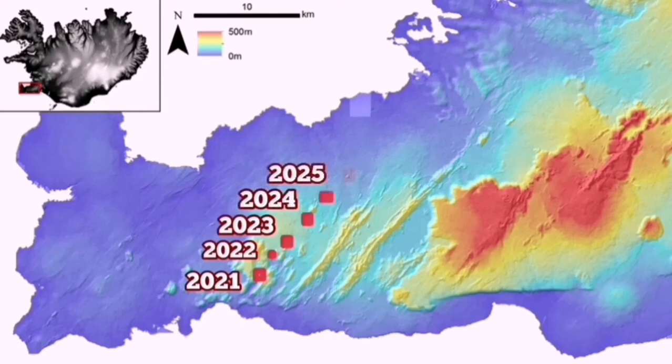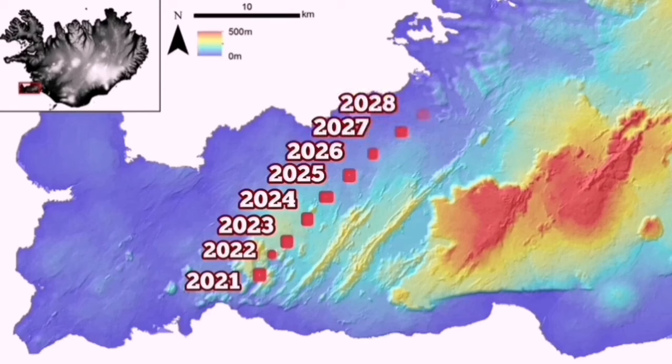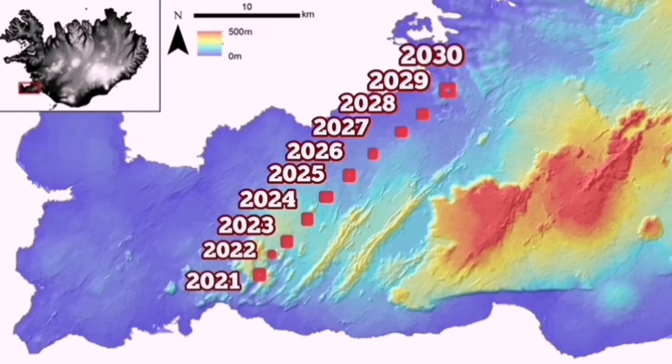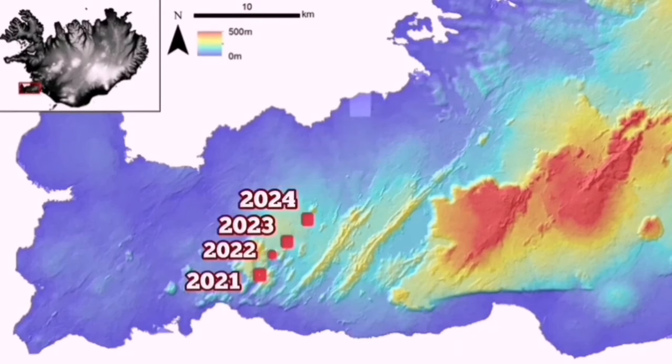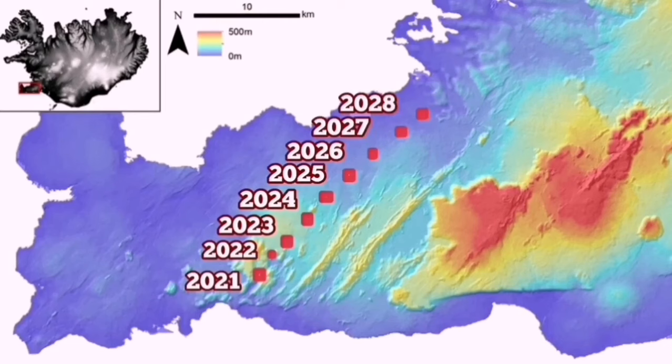From 2025, it will be at a slight angle toward the east, as you see in the other systems parallel to it toward the east. By 2030, it's quite possible that this system may reach Reykjavik or the suburbs of it.